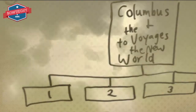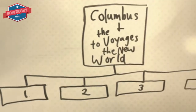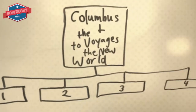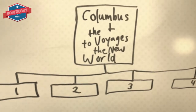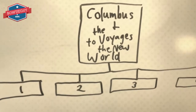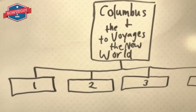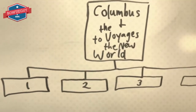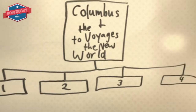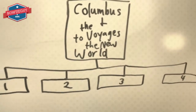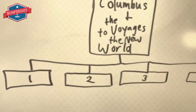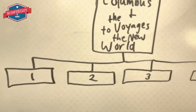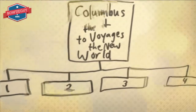This is a tree map. The tree map categorizes and classifies. As you can see here, this is Columbus and the voyages to the New World. He made four voyages, and I can add more pertinent information underneath each category if I so choose.